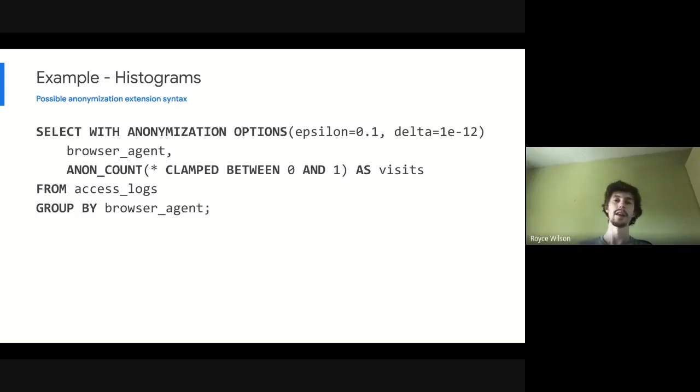When our SQL engine encounters this anonymization extension syntax, it applies those modifications to the query that I was talking about in the example behind the scenes as a rewriter layer, and executes a query that produces provably differentially private output. And refer to the paper for more details on that.